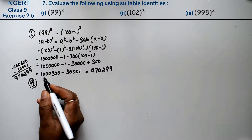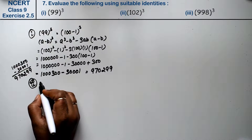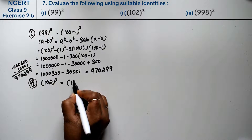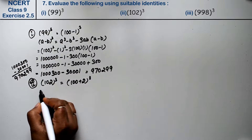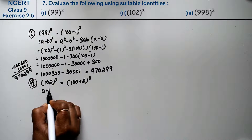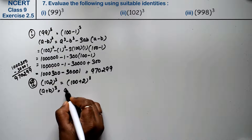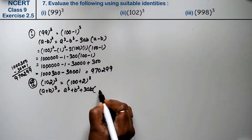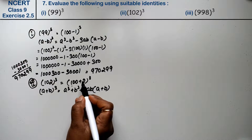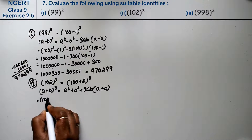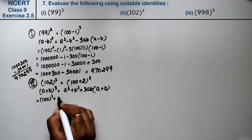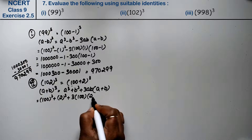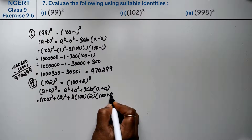Let's do the second part. Second part is 102 cube. So we can write 102 as (100 plus 2) whole cube. This becomes the formula for (A plus B) whole cube: A cube plus B cube plus 3AB times (A plus B). Now A is 100 and B is 2.